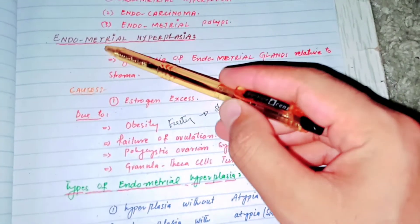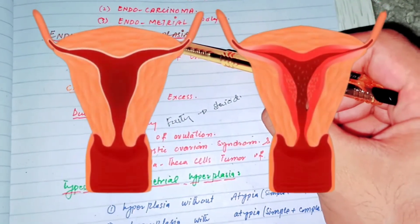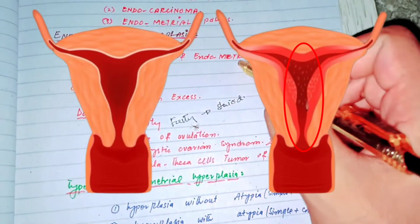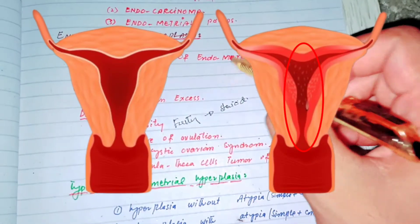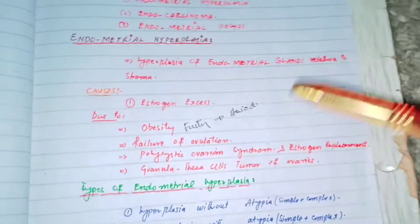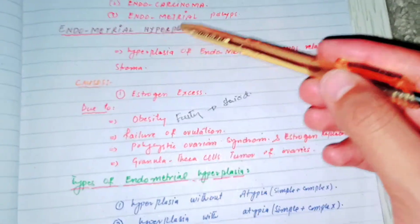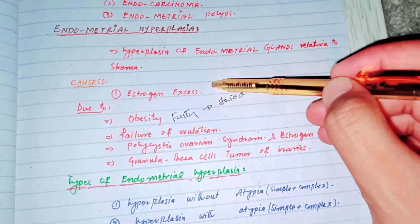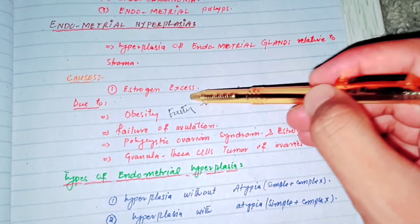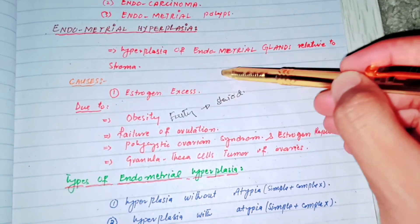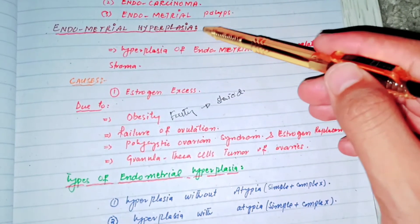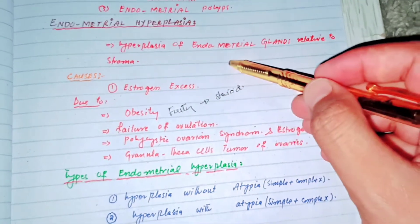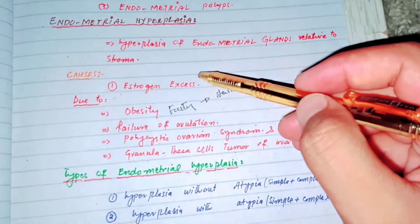Endometria means endometrium and hyperplasia means growth, so it is the overgrowth of the endometrium — the proliferation of the endometrial glands relative to the stroma. The causes of endometrial hyperplasia relate to estrogen: normally the endometrium is responsive to estrogen and progesterone, and estrogen is responsible for endometrial growth. When estrogen becomes excessive, it causes the endometrium to grow more.